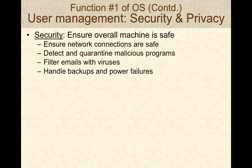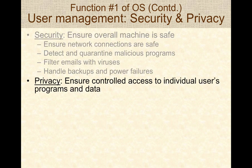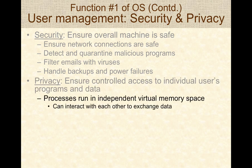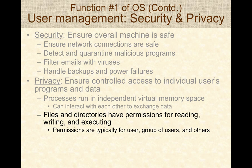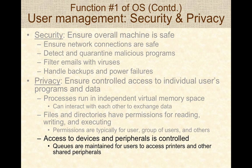The user ID and group ID essentially provide the security and privacy layers in a Linux operating system. Security ensures the overall machine is safe, all network connections are safe, and there are no malicious programs or users. Privacy ensures each individual is given access only to a specific subset of programs and data. Linux runs each process in its own independent virtual memory space. Files and directories have permissions based on user and group settings, and access to devices and peripherals is also controlled using user and group IDs.